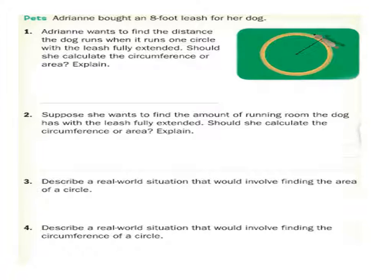Let's look at this example. Adrienne bought an 8-foot dog leash for her dog, and she wants to figure out the distance the dog runs when it runs one circle with the leash fully extended, as you can see in the picture. With the leash fully extended, the dog is following along this path and will cover some amount of distance. Circumference is a form of distance, which is why you're usually dealing with some form of distance, like feet, meters, or inches.